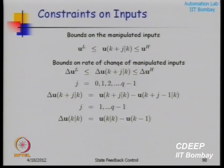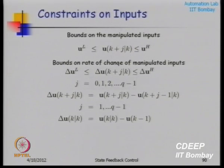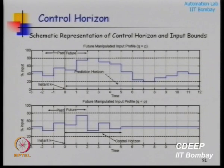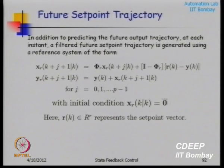MPC can be used for non-square systems where the number of inputs and outputs are not equal. The same optimization works for any input-output mapping. When outputs exceed inputs, you give zone variables because you cannot maintain all outputs at desired set points. For the QP formulation, you define a vector U_future of all future inputs stacked together, and Y_future of all future predictions, then stack all prediction equations into one giant equation: Y_future = S_X x_k + S_U U_future + S_E ε_F.